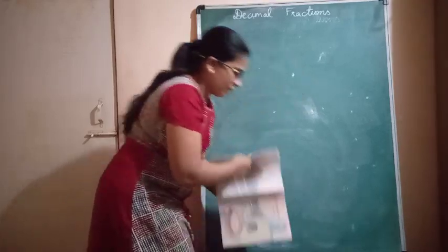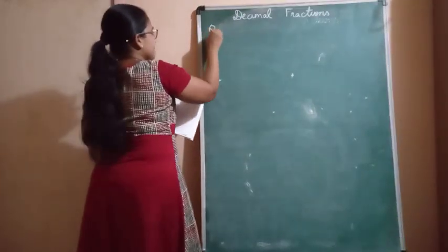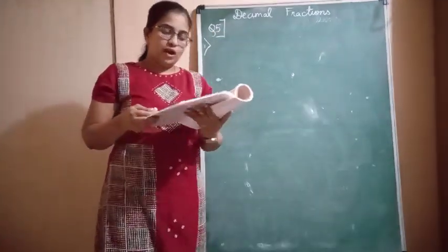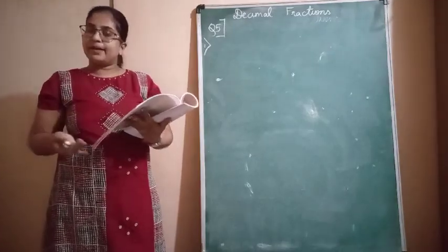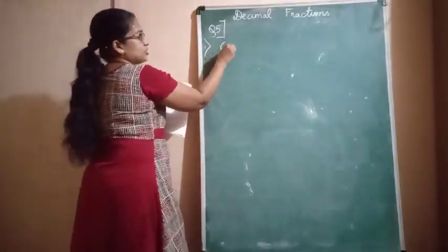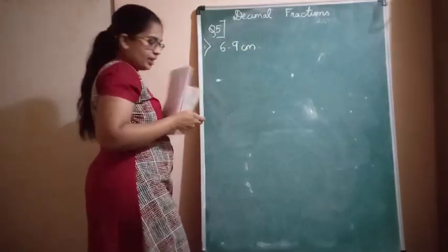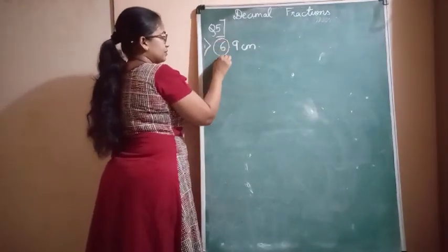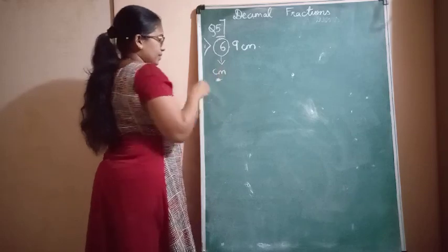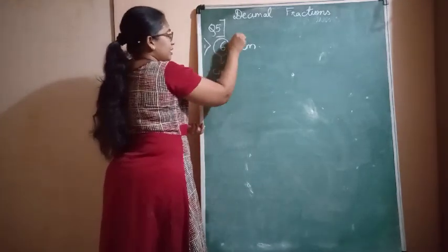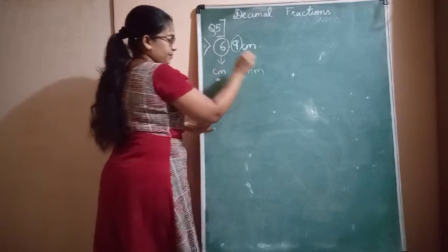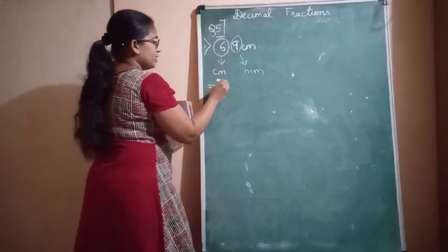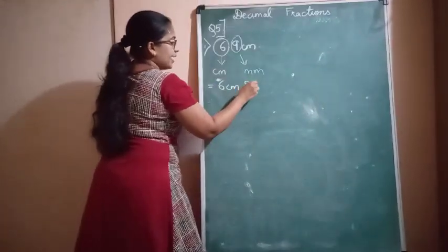The first question in question number 5: you have to write how many centimeters and how many millimeters when given the measurement as a decimal. For 6.9 centimeters — as in previous cases — the number before the decimal is the centimeters and the number after the decimal is the millimeters. So 6.9 centimeters splits into 6 centimeters and 9 millimeters.